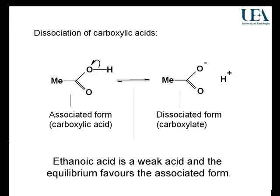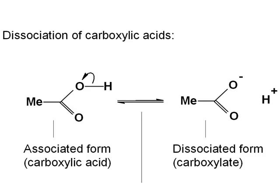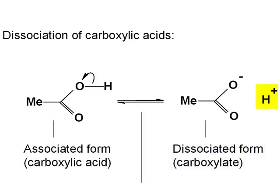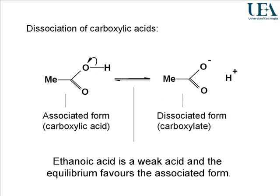I've written for you the acid-base equilibrium between a carboxylic acid and its anion. Many of you will have learned to describe the left-hand side of an equilibrium like this as an associated form, and the right-hand side as a dissociated form. The dissociation is the hydrogen coming from the acid to become a proton — the acid providing a proton in its dissociated form. You should know that carboxylic acids are weak acids.